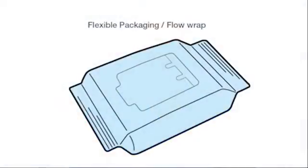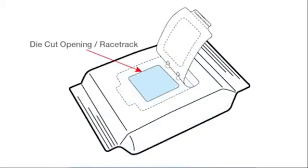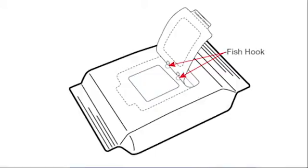Yes, there are four main components of a Precious Sensitive Reclosure. The first would be the flex packaging, which is referred to as a flow wrap. There is the Precious Sensitive labeling material itself. There is the die cut within the flow wrap, which is the opening to the package, referred to as the racetrack. And lastly is a cut within the label, referred to as a fish hole.